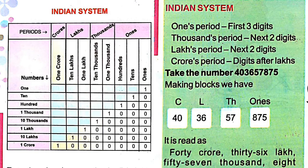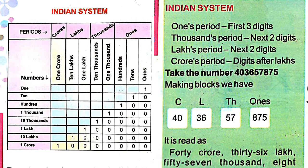After the ones period, the next two digits — 5 and 7 — make another period called the thousands period. In the thousands period there are two columns: the one-thousands column and the ten-thousands column. So seven is in the one-thousands column and five is in the ten-thousands column.